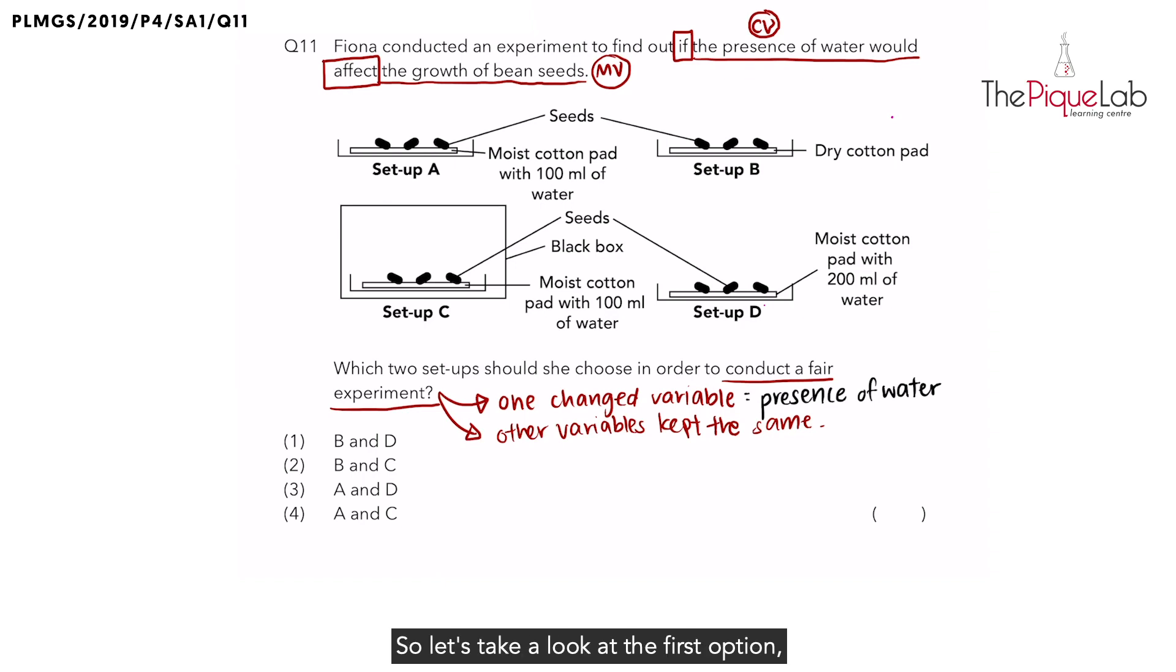So let's take a look at the first option. We have B versus D. We have B and D. So setup B, setup D. Now looking closely, what is the difference between B and D? We can see that B was placed on dry cotton pad, which means that there is no water. What about D? D was placed on a moist cotton pad with 200 ml of water. So in that case, it has water.